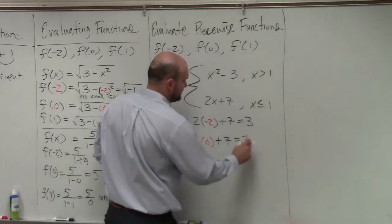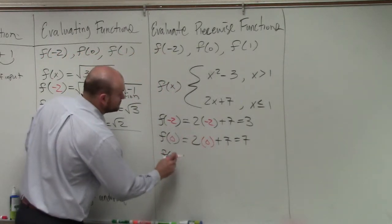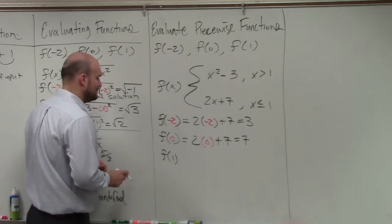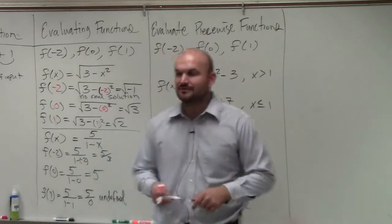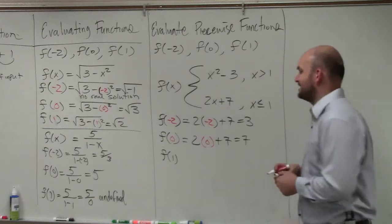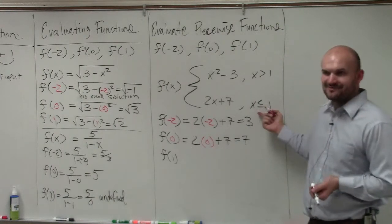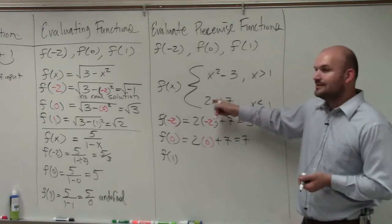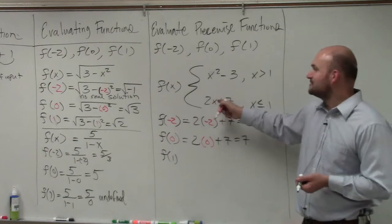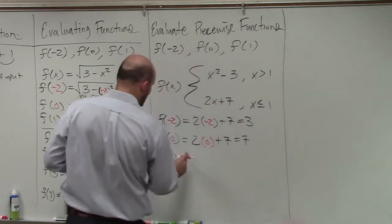Nope, it's really that simple. And then f of 1. Dang it, I'm using the same rules again. Should've used 0. Well, this is not the best example, but we have f of 1. Again, I have to use the same rule again, right? So 2 times 1 is 2, plus 7 is 9.